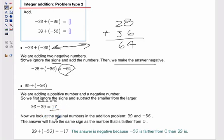Then we look at the original problem and ask ourselves, which number is bigger and what is its sign? Well, 56 is bigger and its sign is negative, so that makes our answer negative.